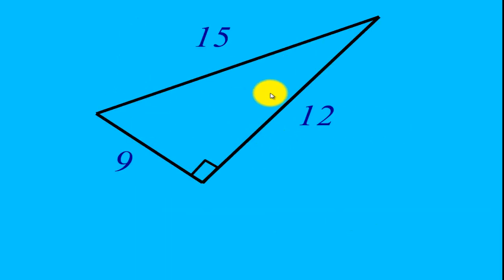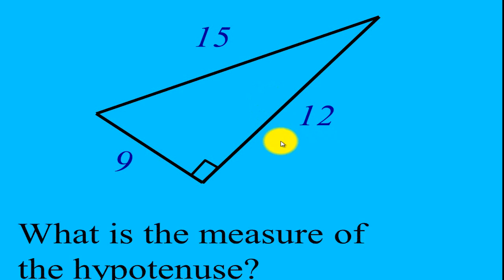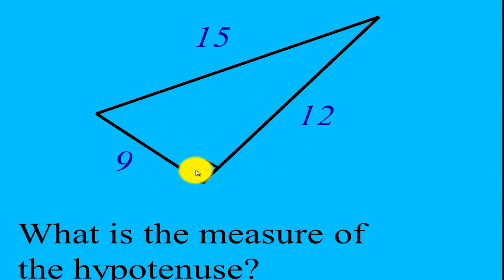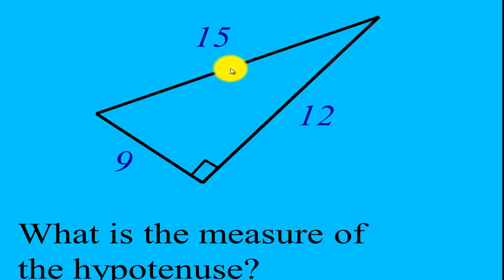Alright, so this is a right triangle. What is the measure of the hypotenuse? Remember that the hypotenuse is the side across the right angle. So the hypotenuse will be this side, and the measure is 15 units.